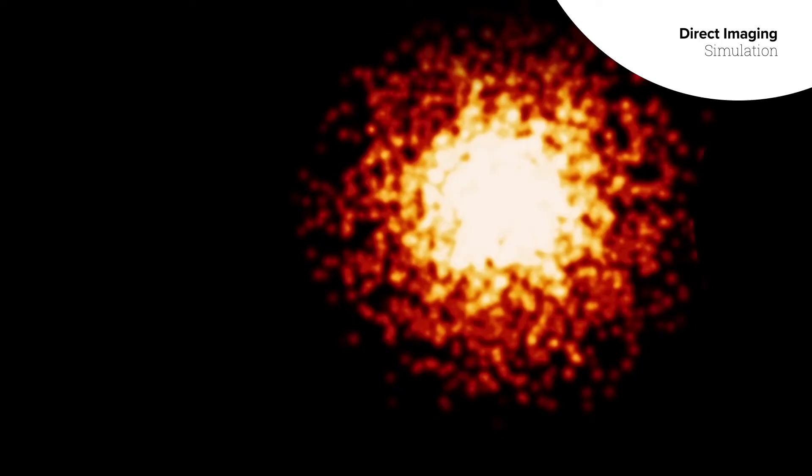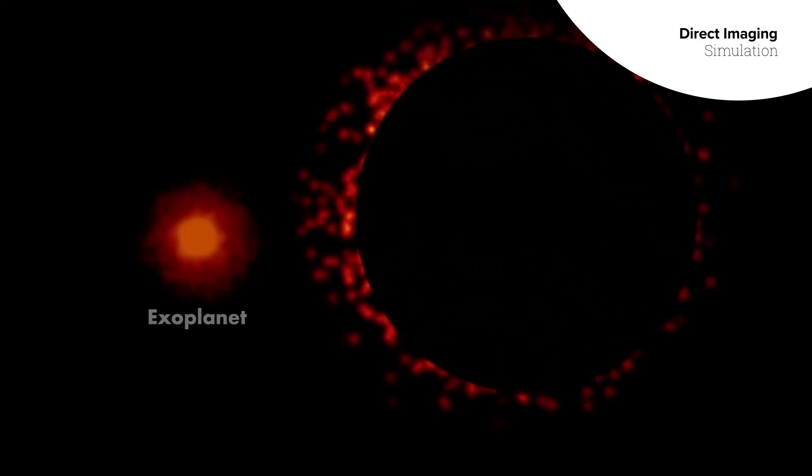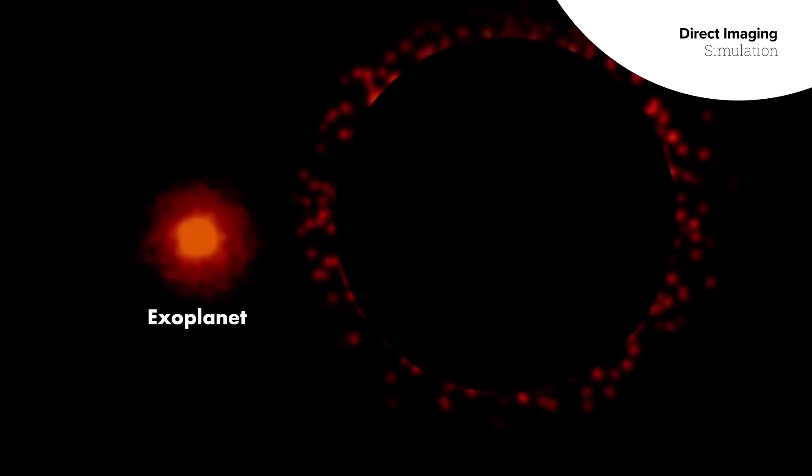As far as getting pictures of the actual exoplanets themselves, it's possible, but very difficult. The telescope has to block the bright star's light to reveal the faint planet nearby.